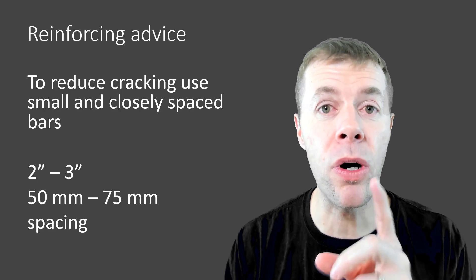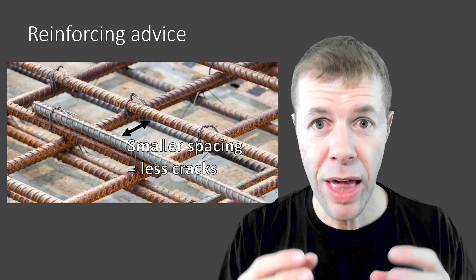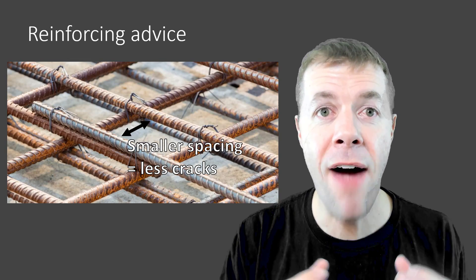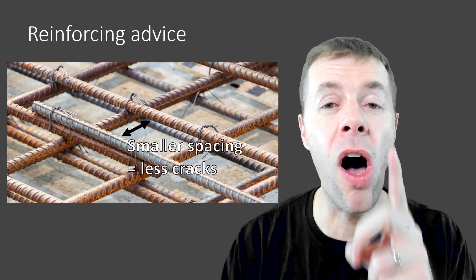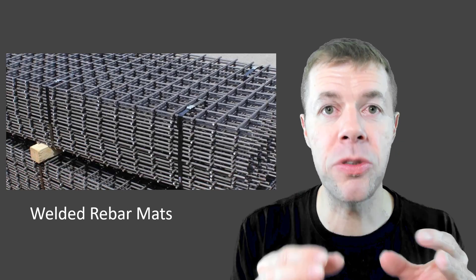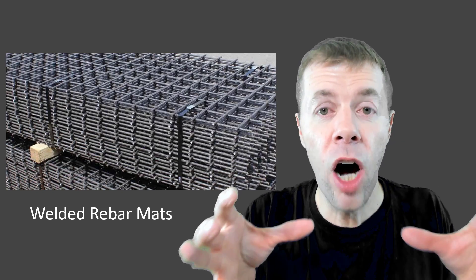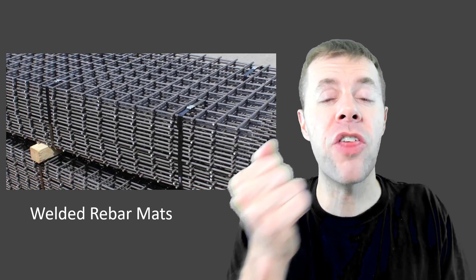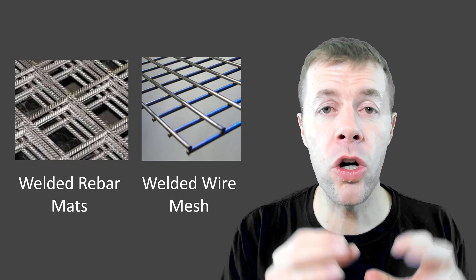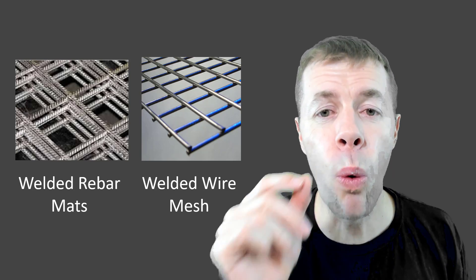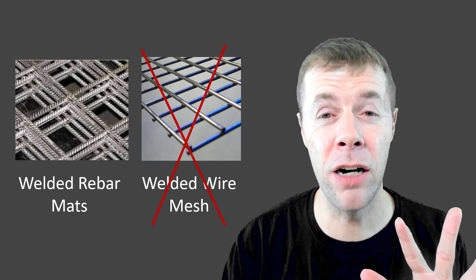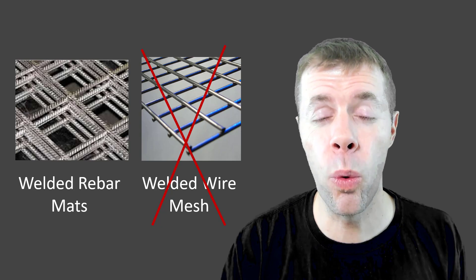It can mean a lot of labor unless you use something that can help you get those bars close together without humans having to tie every single one. An awesome tool to do this is a welded rebar mat. They come to your job site as huge sheets of rebar. You pick them up and put them down — they're unbelievable. They are deformed bars, so they will grip onto the concrete much better than welded wire mesh. I am not a fan of welded wire mesh at all. I like the deformed bars of the welded rebar mats.